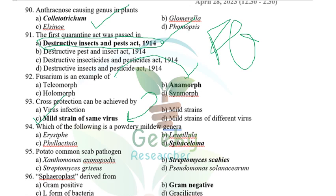Which of the following is NOT a powdery mildew genus? Erysiphe, Phyllactinia, and Leveillula are powdery mildew genera. Sphaceloma is NOT a powdery mildew genus — it causes cankers or fruit rots.